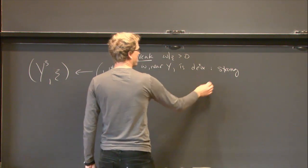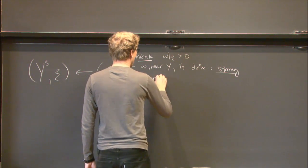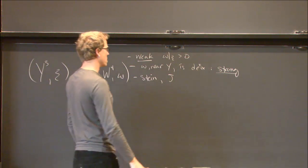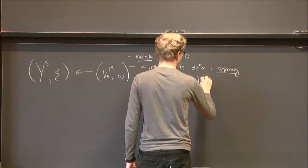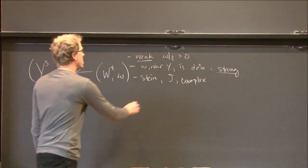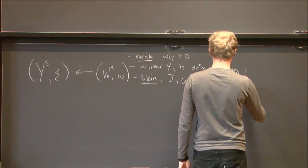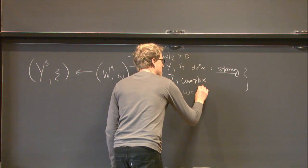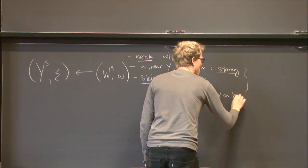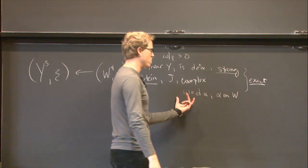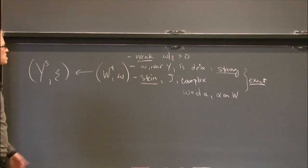A strengthening of that is Stein, where there's a compatible J making the manifold complex-analytic. And in between, if you're Stein, your symplectic form is exact everywhere. So you could ask for something in between where the symplectic form itself is exact on the nose as a form.